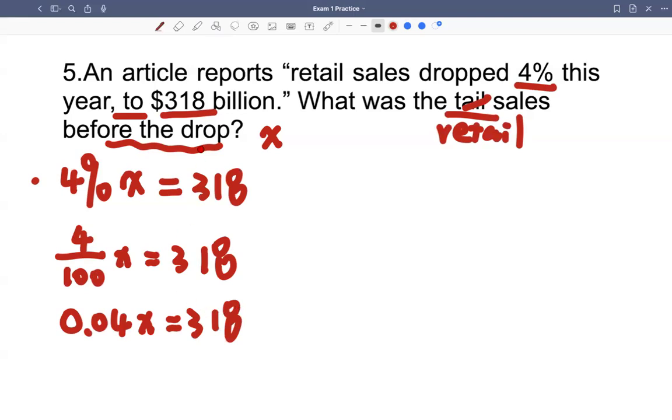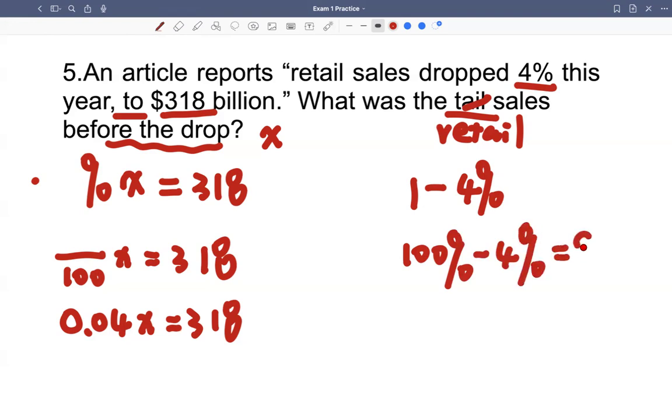One second, this is not right. Because it dropped 4%, that means 96%, right? So this will be how much dropped, it's not dropped. This will be not 4%, but 1 minus, because 4% is dropped. So 1 minus 4%. 1 is 100%, 100% is 1. Minus 4%, so that's 96%.